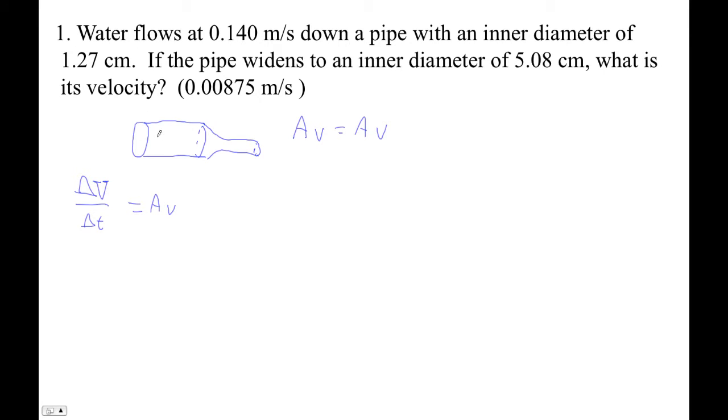So here we've got a big area, maybe a small velocity. Here we've got a small area and a big velocity. That's like putting your thumb over the end of a garden hose.